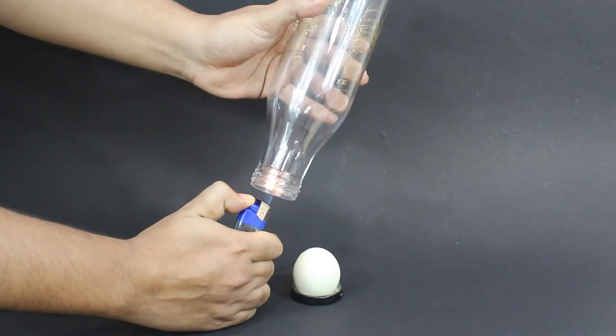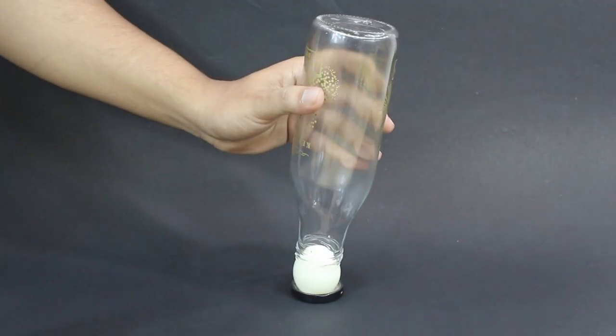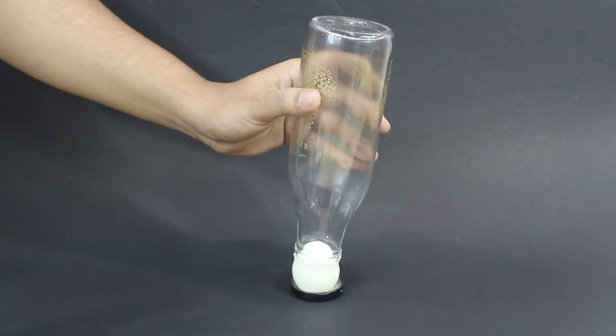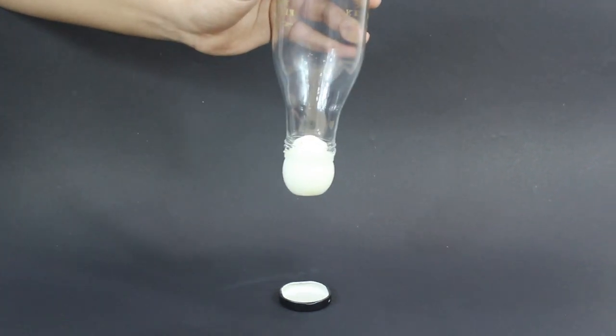Now let us try the same trick upside down. Hold the bottle on a flame for a while and place an inverted bottle on the boiled egg. Surprisingly you can lift the egg without touching it with hands.